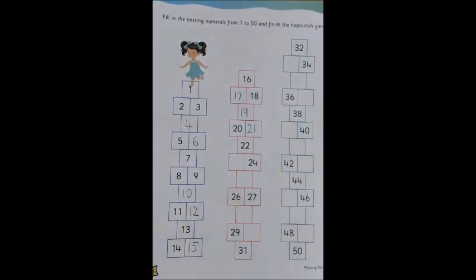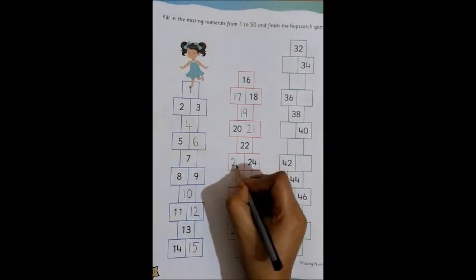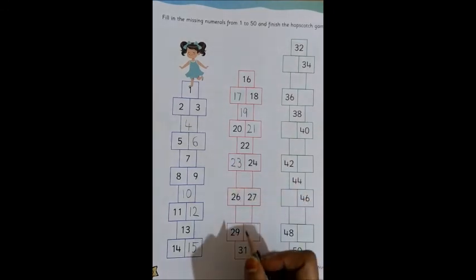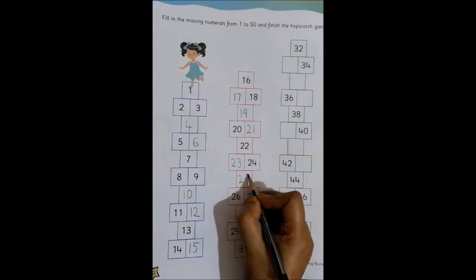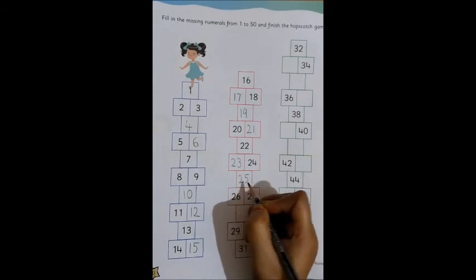22 is there, which will be the next number? Yes, 23. So, we write 2, 3, 23. 24 is there, then we write 25. 2 and 5, 25.